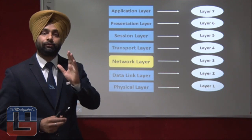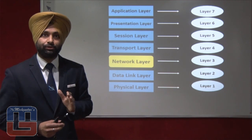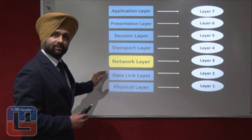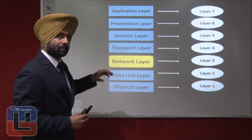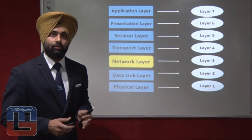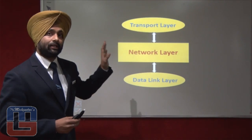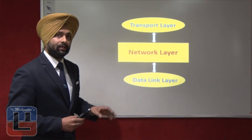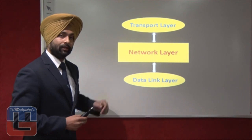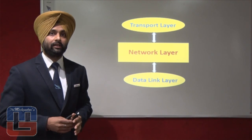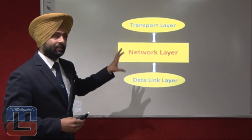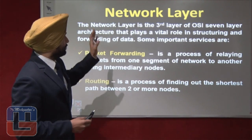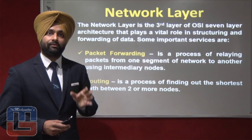We follow the bottom-to-top approach, meaning we start from the first layer at the bottom and move upward. The network layer is located below the transport layer and above the data link layer, so it sits in between the transport and data link layers.